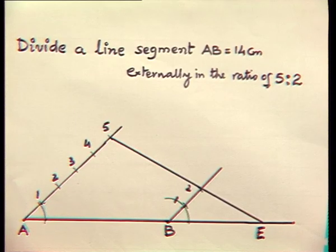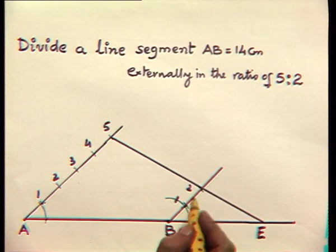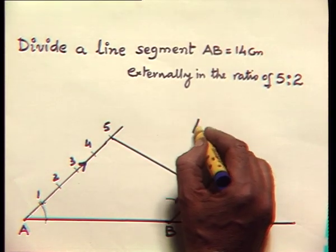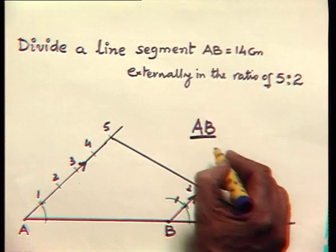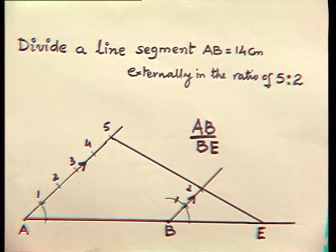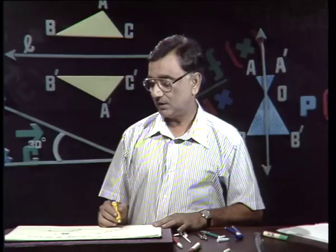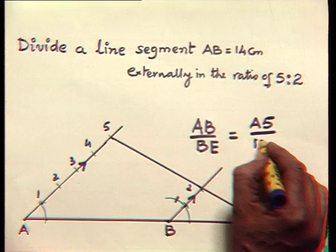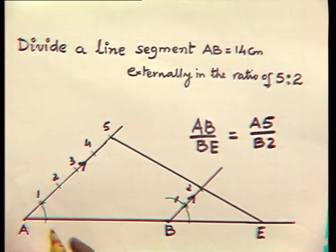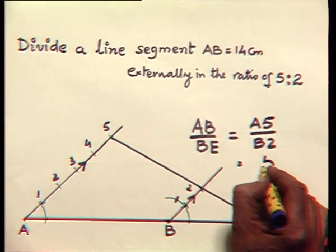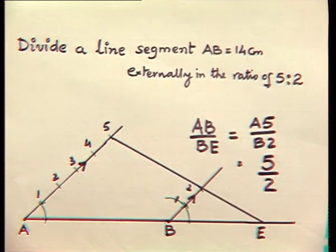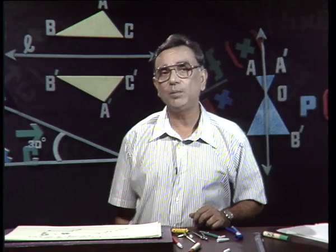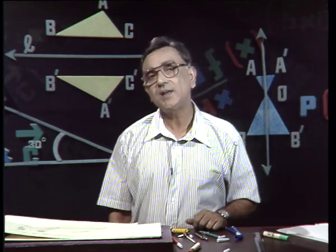Let us use the BPT to verify whether it is actually 5 is to 2 or not. This line is parallel to this line. So by the basic proportionality theorem, AB upon BE has to be equal to A5 upon B2. Now, since A5 is 5 parts and B2 is 2 parts, the ratio becomes 5 is to 2. So this is how we make use of similarity and the basic proportionality theorem to divide a line segment externally in a particular ratio.